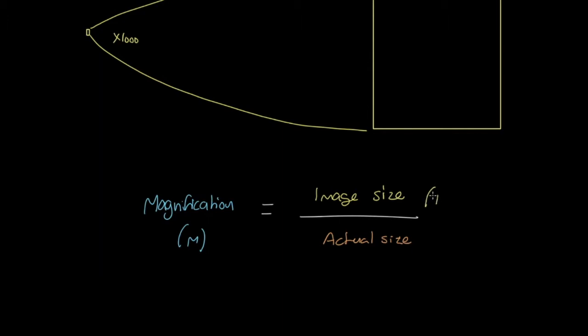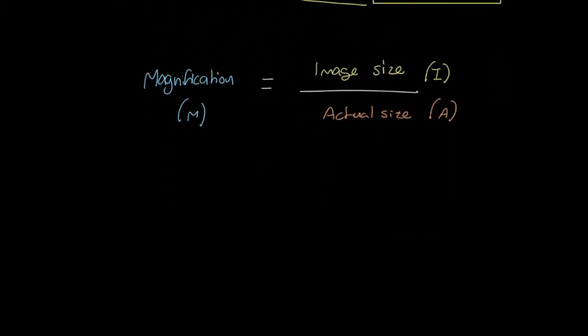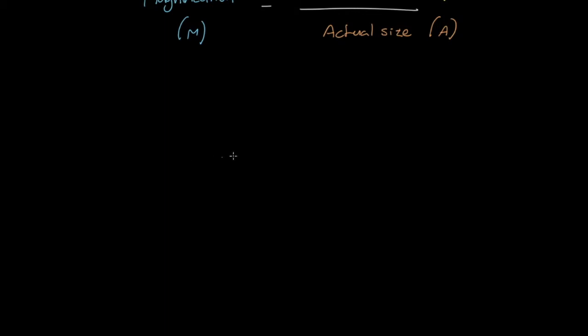Now, I did mean to put an I for image size, and I did mean to put an A for actual size, because now we've got that, we can use a nifty little trick, which I'm sure is not completely unfamiliar to you, having studied science and maths for quite a bit of time at school. We can use what's called an equation triangle, which means that we can now calculate any aspect of that equation. And it works like this.